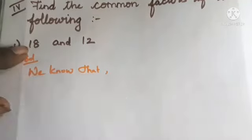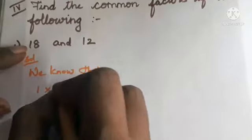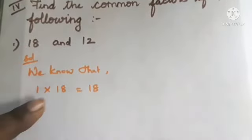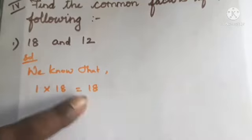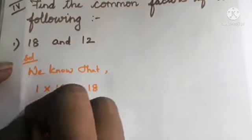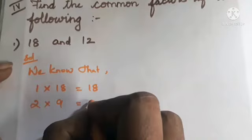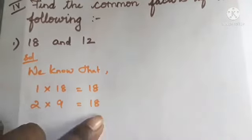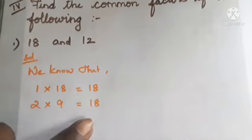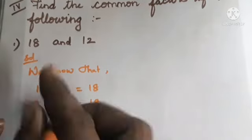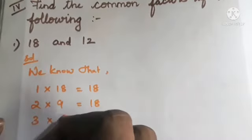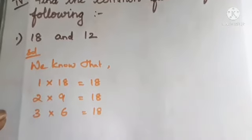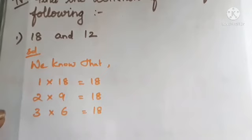To find factors of 18 using multiplication: 1 into 18 is 18, so 1 and 18 are factors. Next, 2 into 9 is 18, so 2 and 9 are factors of 18. Next, 3 into 6 is 18, so 3 and 6 are also factors of 18. Tables 4 and 5 won't give 18 as a product.